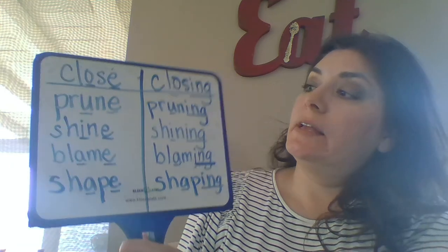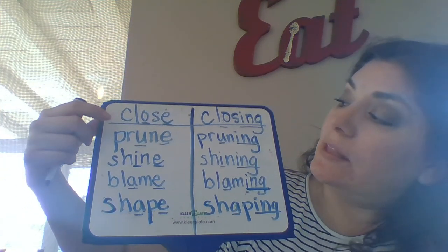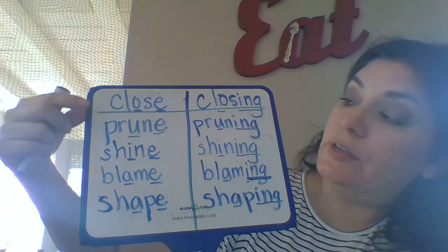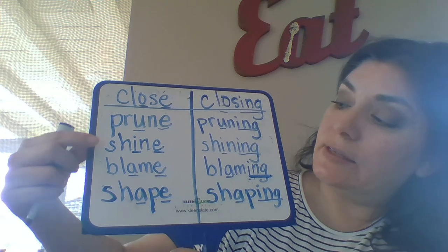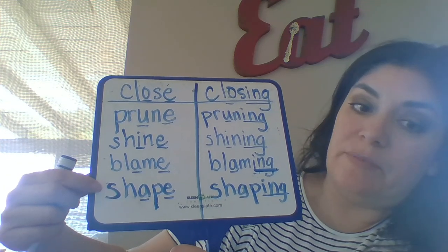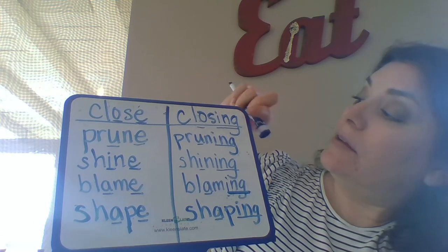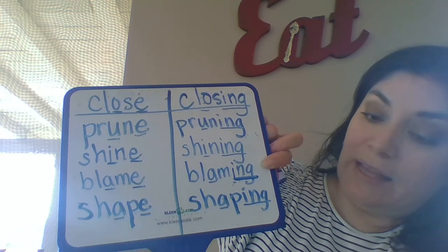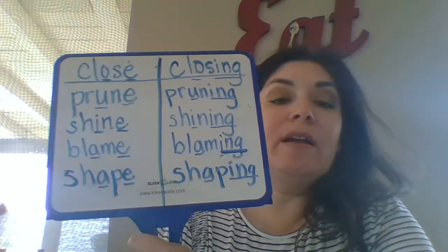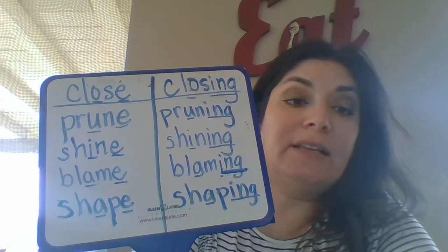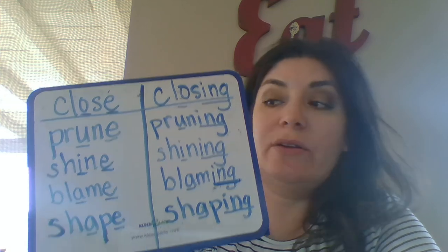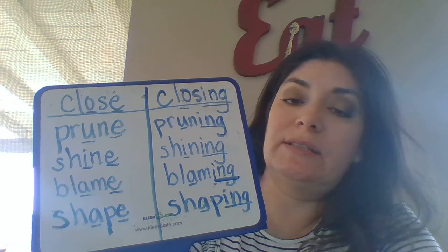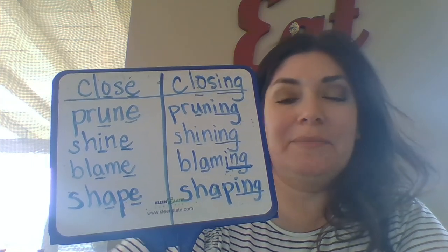Here is my board: 'shape' with the silent E, and 'shaping' with the -ING ending. Now let's read our words out loud together — left column first: close, prune, shine, blame, shape. And on the right: closing, pruning, shining, blaming, shaping. Think about the silent E vowel pattern when you're writing and reading — it'll give you another clue to read new words. Thanks for participating in our word study!